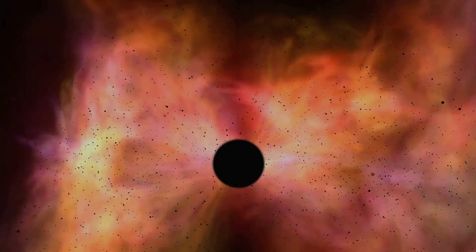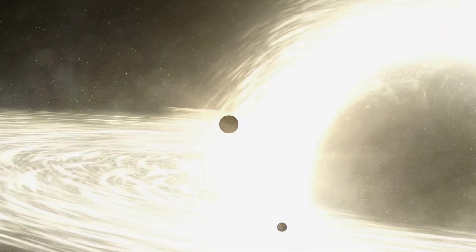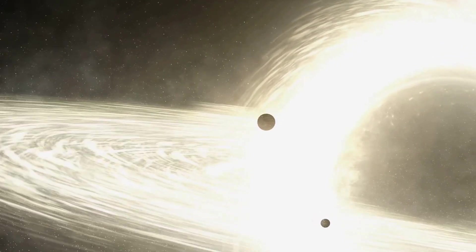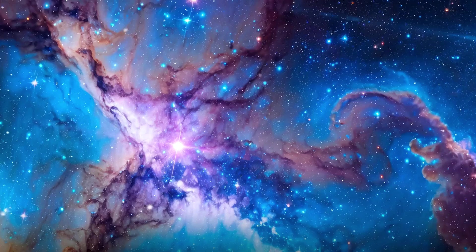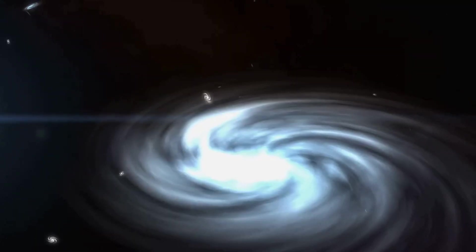In this scenario, the universe doesn't end with a bang, but rather a slow, inexorable fade into darkness. Another theory known as the Big Crunch postulates that the universe's expansion could reverse, causing everything to contract back into a single point, a mirror image of the Big Bang.